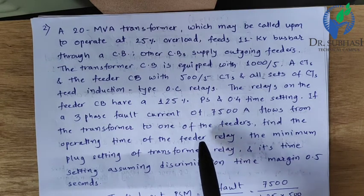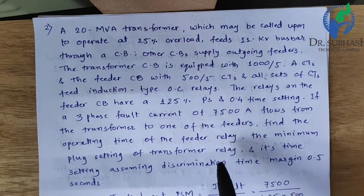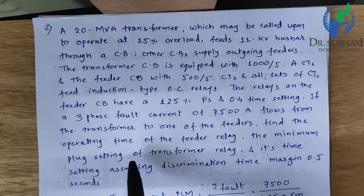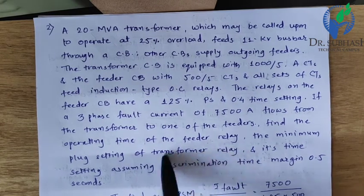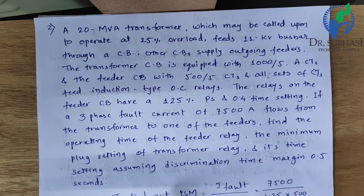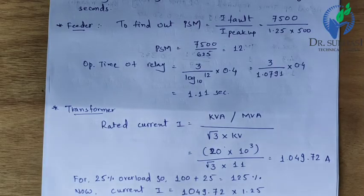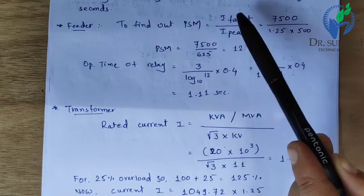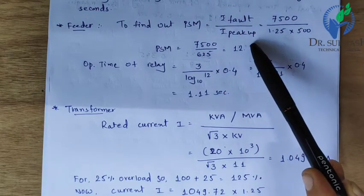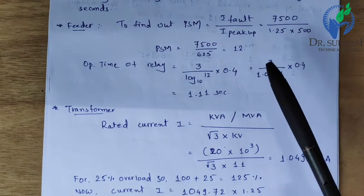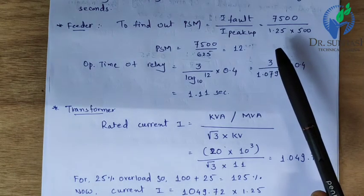We must find the operating time of the feeder relay first, then the minimum plug setting of the transformer relay and its time setting, assuming a discrimination time margin of 0.5 seconds. For the feeder, PSM equals fault current divided by pickup current. The feeder relay has 125% plug setting applied to a 500 A primary current.